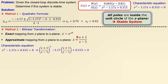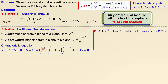Substituting gives: ((s+1)/(s-1))² − 1.17·((s+1)/(s-1)) + 0.315 = 0. Multiplying both sides by (s−1)² removes the denominators, leaving (s+1)² − 1.17(s+1)(s−1) + 0.315(s−1)² = 0. Working out these parentheses and collecting terms yields s² + 9.49s + 17.14 = 0.